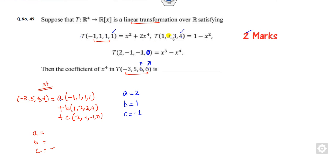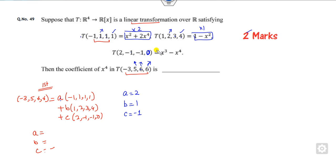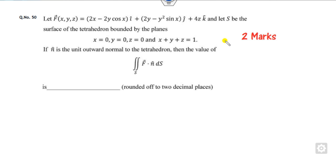Looking at the third component: if a = 2, we get 2 plus 3 = 5, and we want 6, so take c = -1. Checking the pair: twice this is 2, plus 2 is 4, minus (-1) is 5. This is satisfied. So a = 2, b = 1, c = -1. Multiply the first by 2, the second by 1, and the third by -1. The coefficient of x⁴: 4 plus 1 = 5. The right answer is 5.